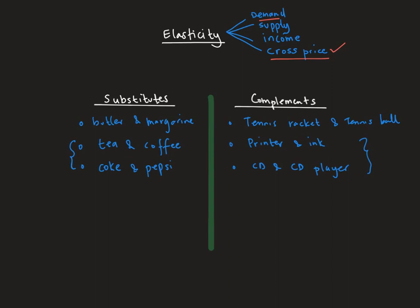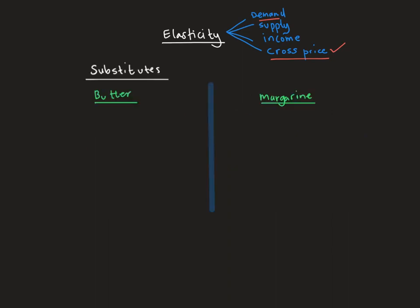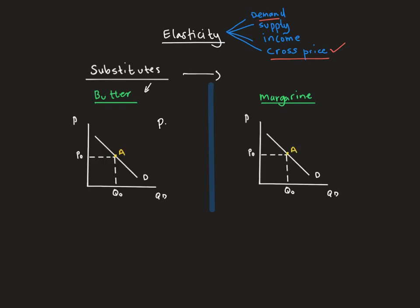Cross price elasticity of demand measures the effect of one good's price on the consumption or quantity demanded of another good. Let's focus on the concept of substitutes using butter and margarine as our two examples, which we'll show on different demand curves. Let's suppose the price of butter increases and, because we're dealing with substitute products, it will have an effect on the quantity consumed of margarine.